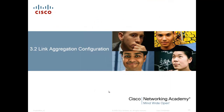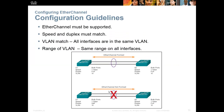Now for configuration: the EtherChannel must be supported — all the Cisco stuff supports it, but if you buy somebody else's switch make sure EtherChannel is supported. Speed and duplex must match. The VLANs must match — if you're forming an EtherChannel to make a trunk, the allowed range of VLANs have to be the same. For example, if both ports are gigabit, both full duplex, and both in VLAN 10, they would form. But if one's half duplex and one's full duplex, the channel would not form. The speed and duplex setting of all ports in the channel have to match.